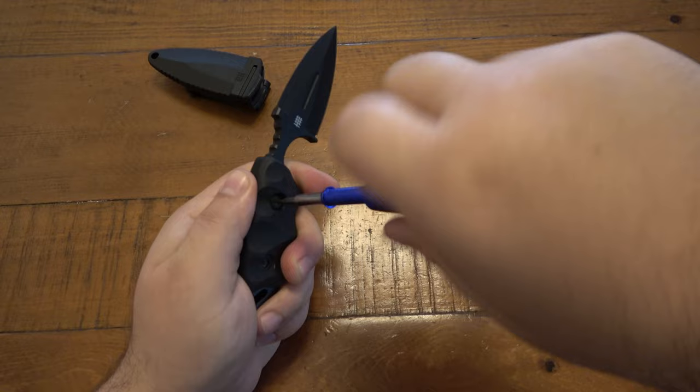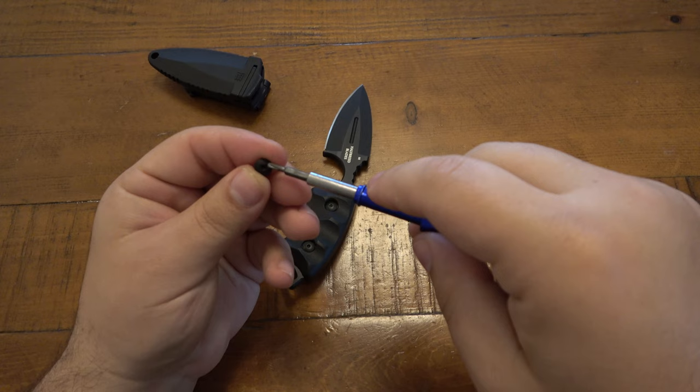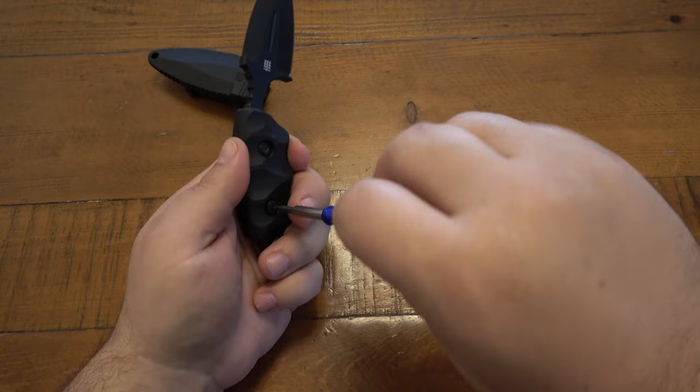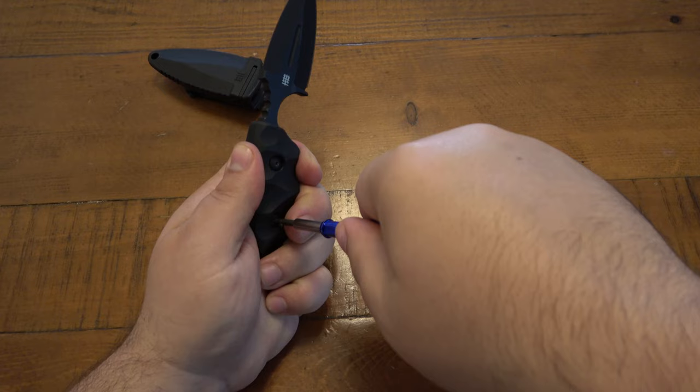So even without the Loctite, I'm very, very confident that this is going to be secure. It's not going to have issues as far as these coming loose at all. But again, I can't stress enough what a pain it was to get these scales off. So if you have this knife, it is not going to accidentally fall apart at all.